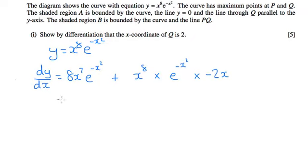So if we put all that together, we've got 8x^7 times e^(-x^2) minus 2x^9 times e^(-x^2).